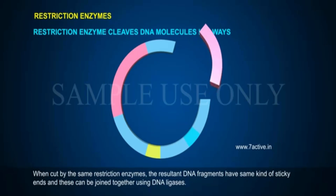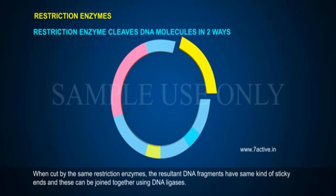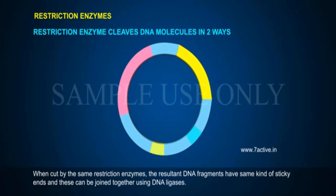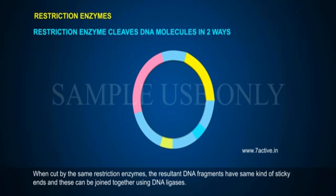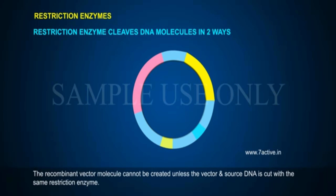When cut by the same restriction enzymes, the resultant DNA fragments have the same kind of sticky ends and these can be joined together using DNA ligases. The recombinant vector molecule cannot be created unless the vector and source DNA are cut with the same restriction enzyme.